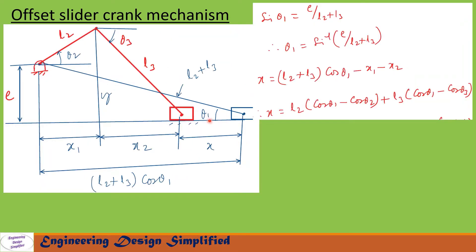The angle theta1 can be calculated as sin(theta1) = e / (l2 + l3), so theta1 = sin⁻¹(e / (l2 + l3)). Now the displacement of the slider x can be written as x = (l2 + l3)cos(theta1) minus x1 minus x2.